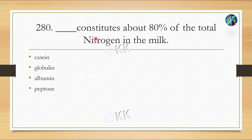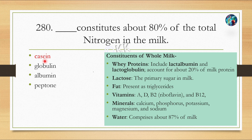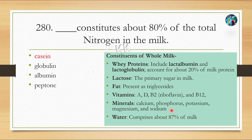This constitutes about 80% of total nitrogen in milk: option A, Casein; option B, Globulin; option C, Albumin; option D, Peptone. The correct answer is option A — Casein. Along with casein, milk contains whey proteins — lactalbumin and lactoglobulin — which constitute about 20% of milk protein. Milk also contains lactose as its primary sugar, fat in triglyceride form, vitamins A, D, B2, and B12, minerals like calcium, phosphate, potassium, magnesium, and sodium, and 87% water.